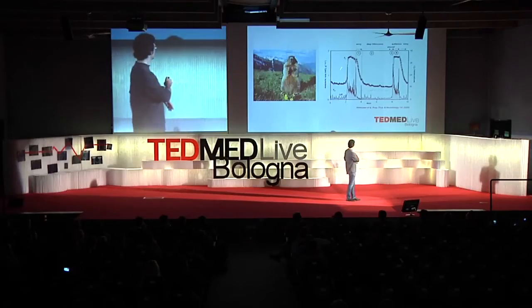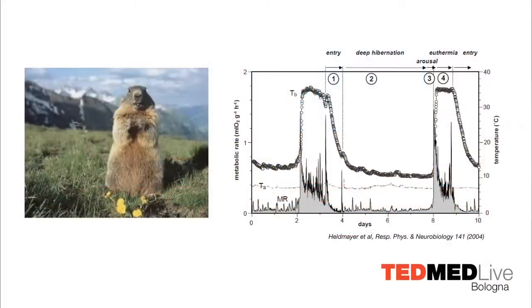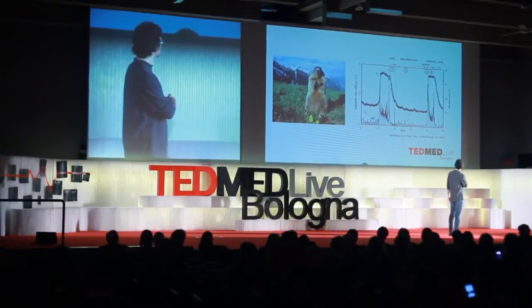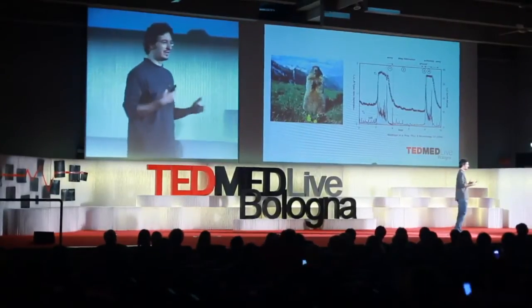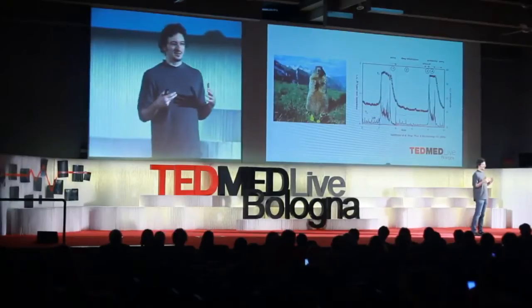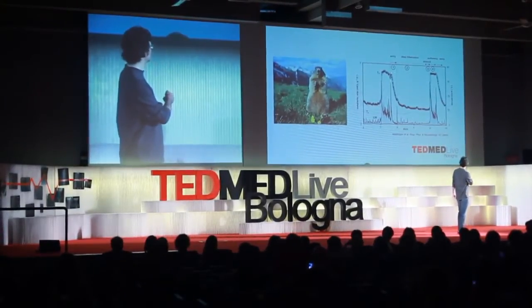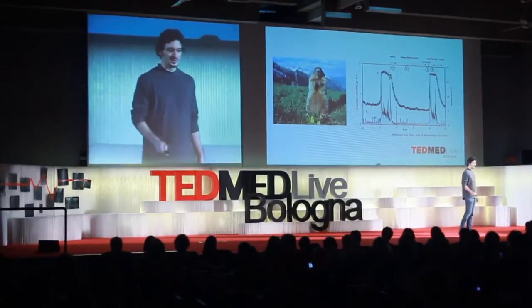In this case, you can see the body temperature of the marmot dropping from 37 down to about 10 degrees Celsius, which is only 5 degrees above the ambient temperature. How does the marmot do that? It drops its metabolic rate — the amount of energy, the amount of work that your cells do in your body. The more cells work chemically, the more heat they produce. The marmot's cells stop working, and as a consequence, body temperature drops.